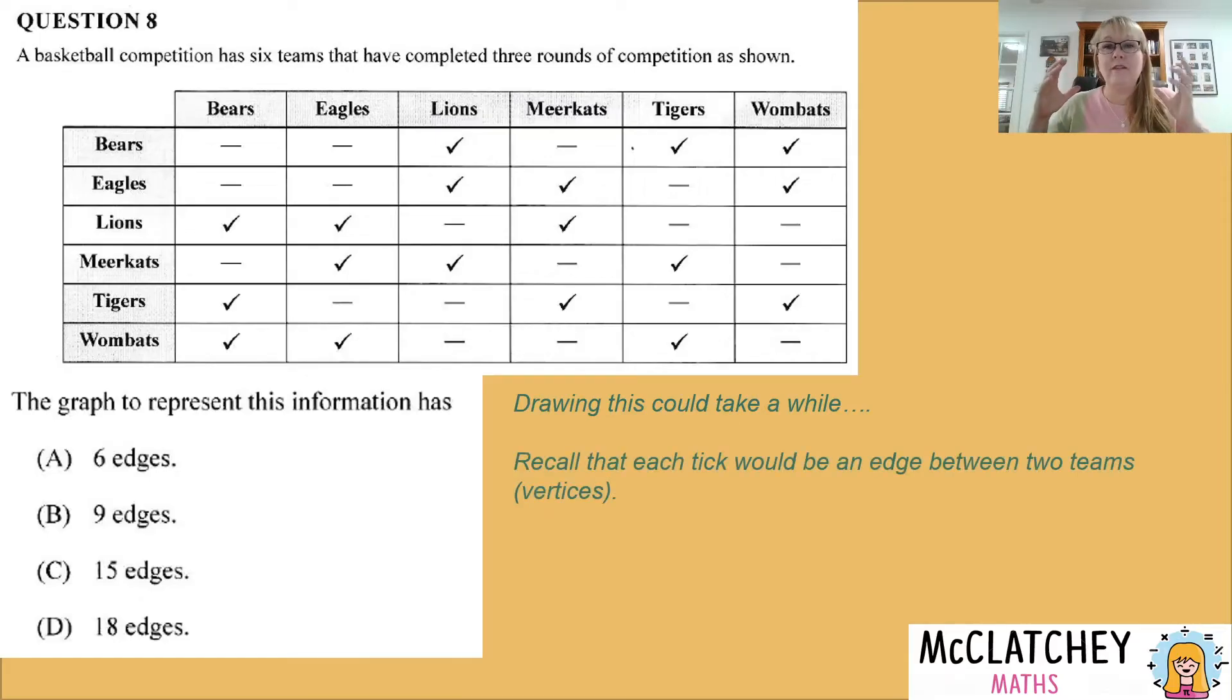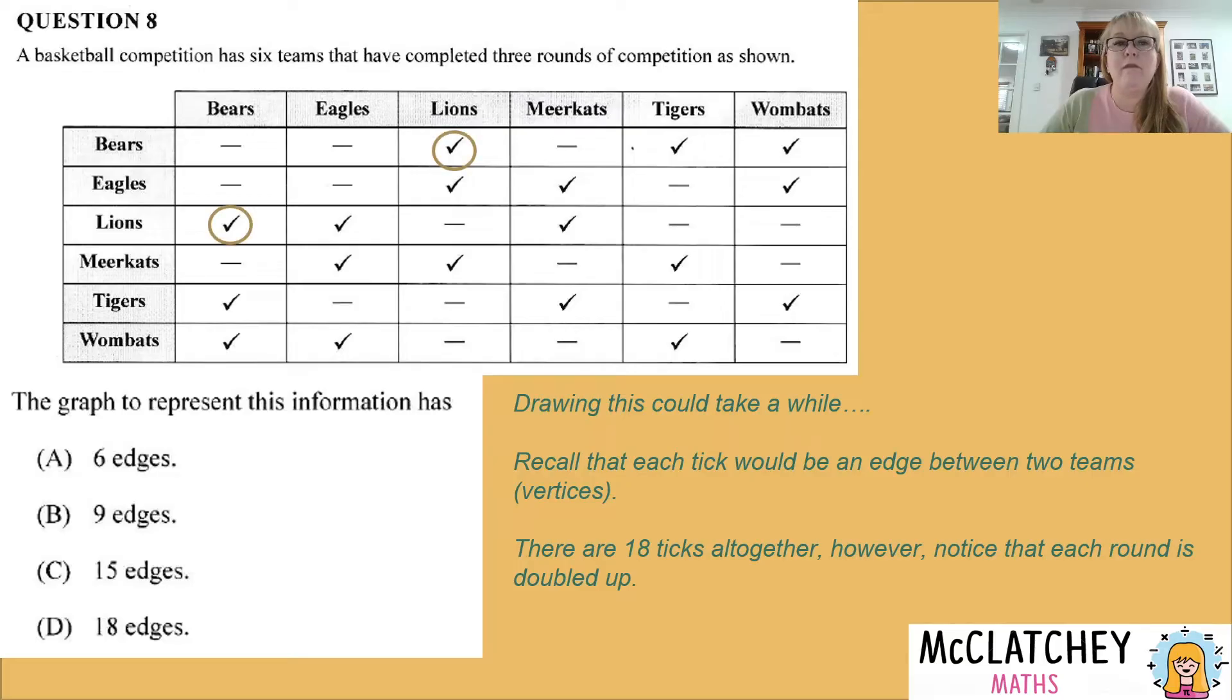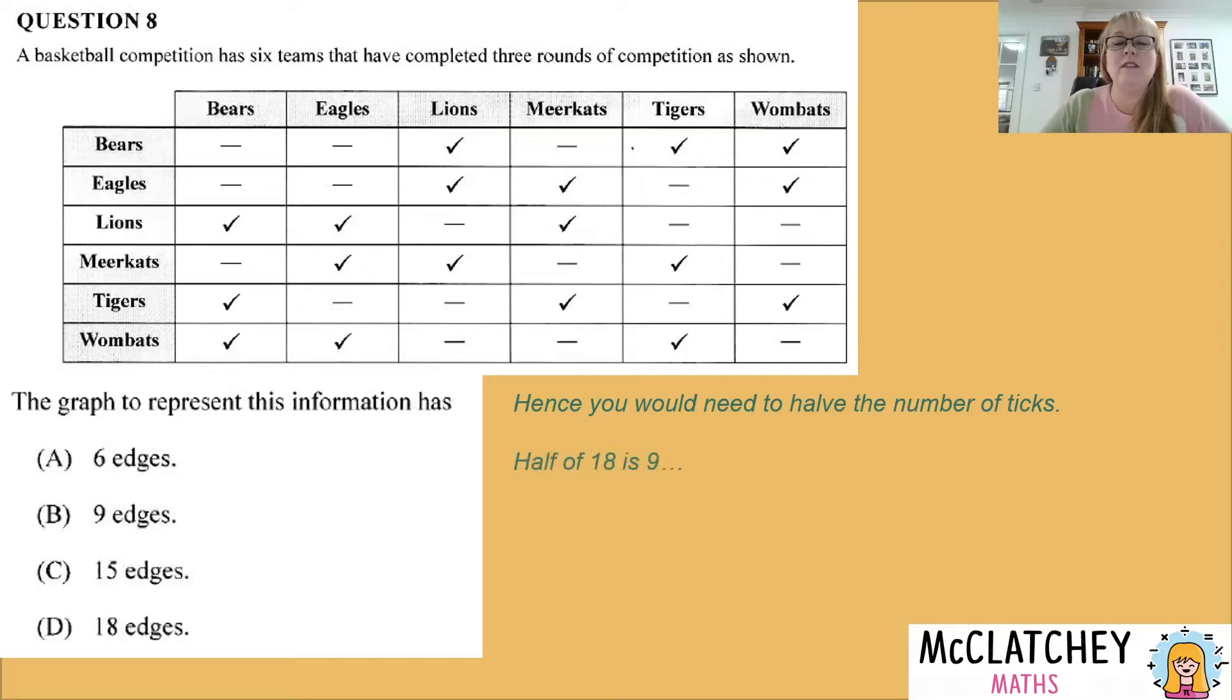So the first bit of logic you could recall is that every tick is going to, if you were to draw, for example, between the bears and the lions, you're going to be drawing an edge between them because the bears and the lions competed against one another. So those ticks actually represent edges between two teams or two vertices. Okay. So what you could then do is go, okay, well, there's count them up. There's 18 ticks all together. So therefore you might be saying to yourself, well, therefore the answer has got to be D18. But you'd notice, however, that every round is doubled up. And what I mean by that, if we look at the bears versus the lions going down the matrix for the bears, we can see the bears and have competed against the lions. But if we go across from the bears, we can see that tick is there as well. So each of those edges is actually represented twice backwards and forwards. So while there's 18 ticks, what that means is you have to halve the number of ticks to work out how many edges there would be. Half of 18 is nine, which means that B is the only possible answer.